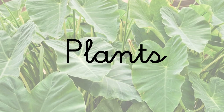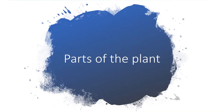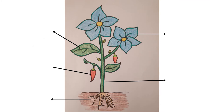Hello! In this new unit we are going to learn about plants. First we are going to revise the parts of a plant. Here you can see a picture of a plant and now we are going to label its parts.